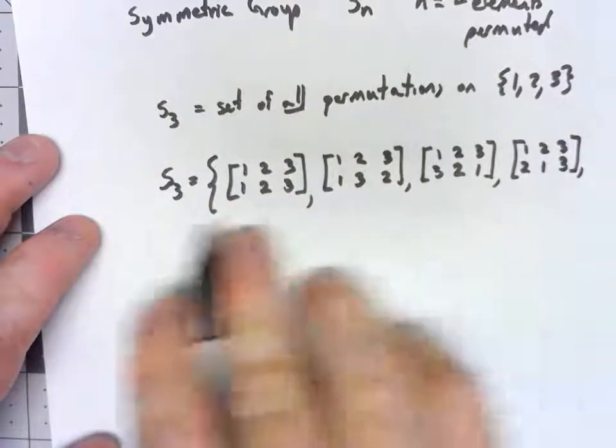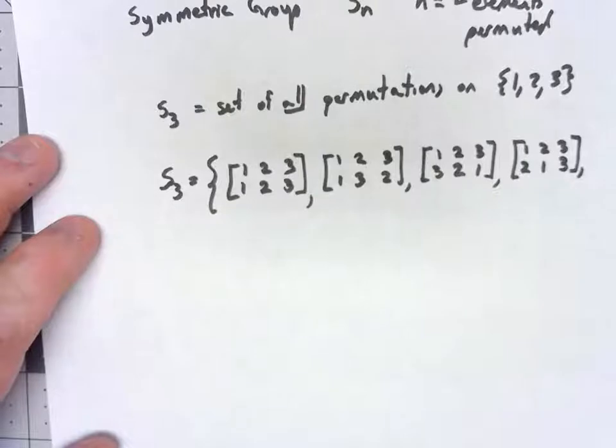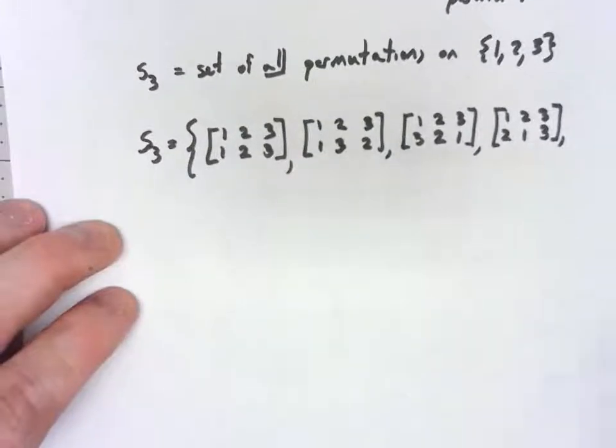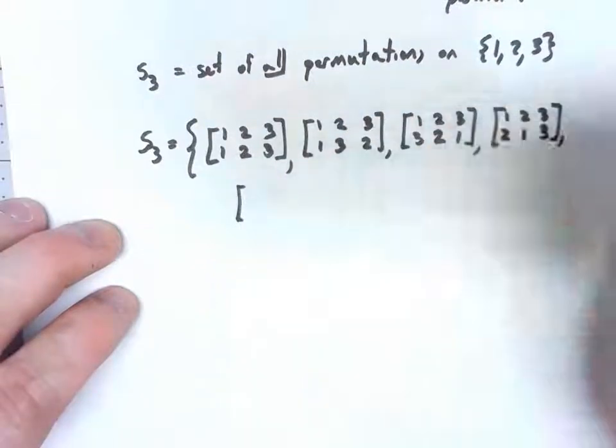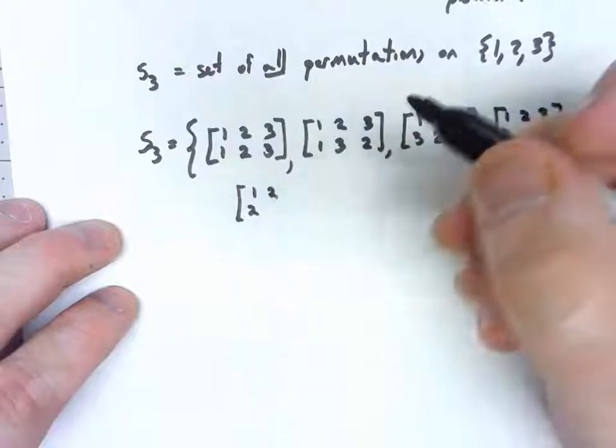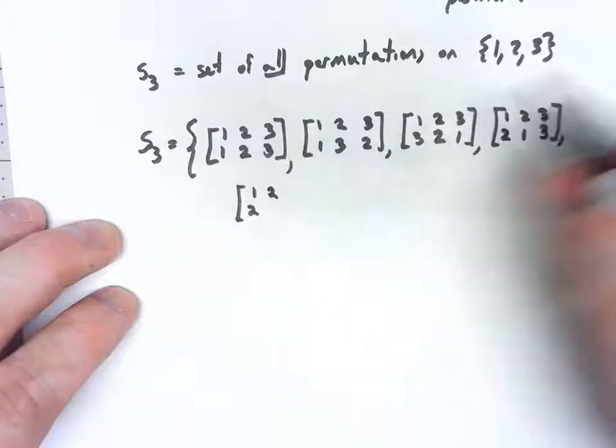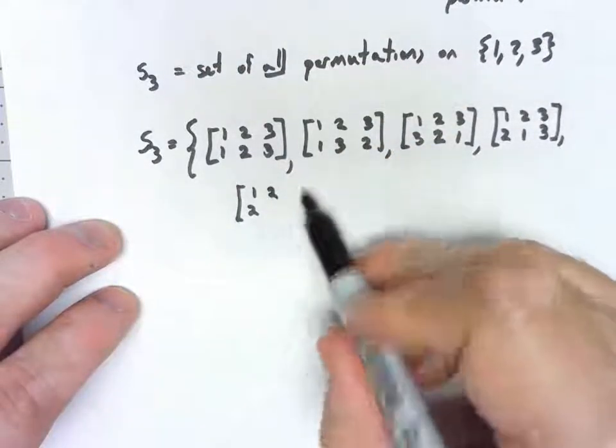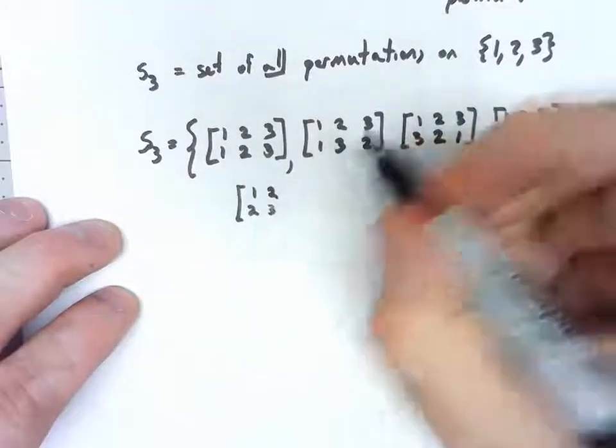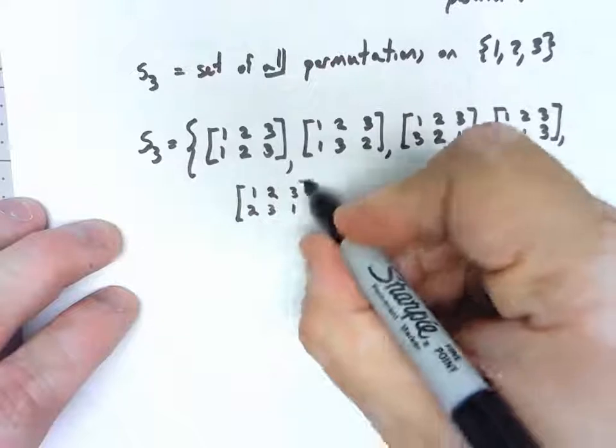So those are all the ones where something is fixed. All the other ones have to have everything changing. So 1 could go to 2, 2, well if 2 were to go to 1, then 3 would have to go to 3. I'd be back to this. So 2 would have to go to 3, 3 would have to go to 1.